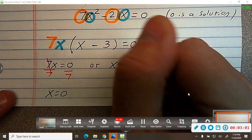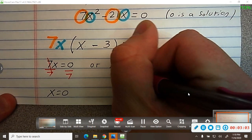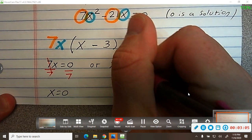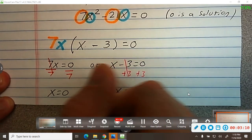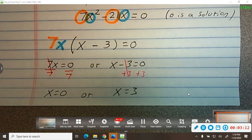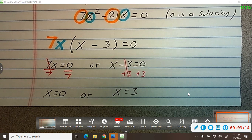And then the other solution, what number minus 3 is 0, would be 3. So x equals 3. So I got 0, then I got 3.